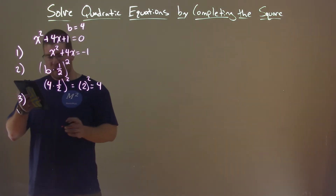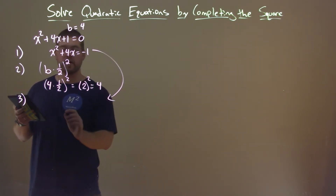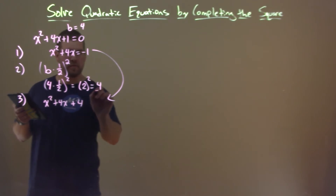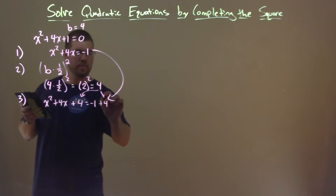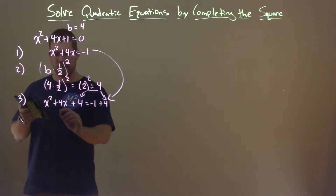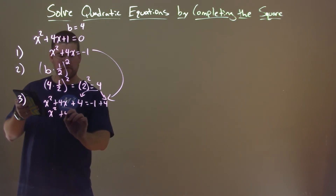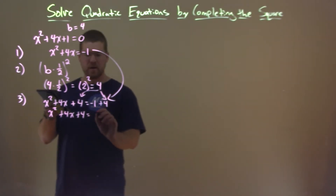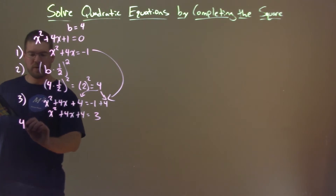Our third step says we take that and add it to both sides of the equation. So we have x squared plus 4x plus 4 equals negative 1 plus 4. We simplify where we can — the right hand side becomes 3.